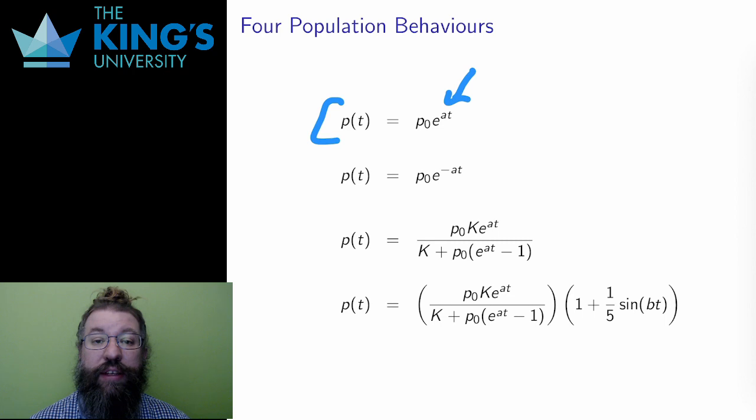In the second, I have a negative in the exponent. Instead of exponential growth, this is exponential decay. The negative exponent leads to smaller and smaller numbers. The limit here as t goes to infinity is zero. This is a population that will eventually go extinct.